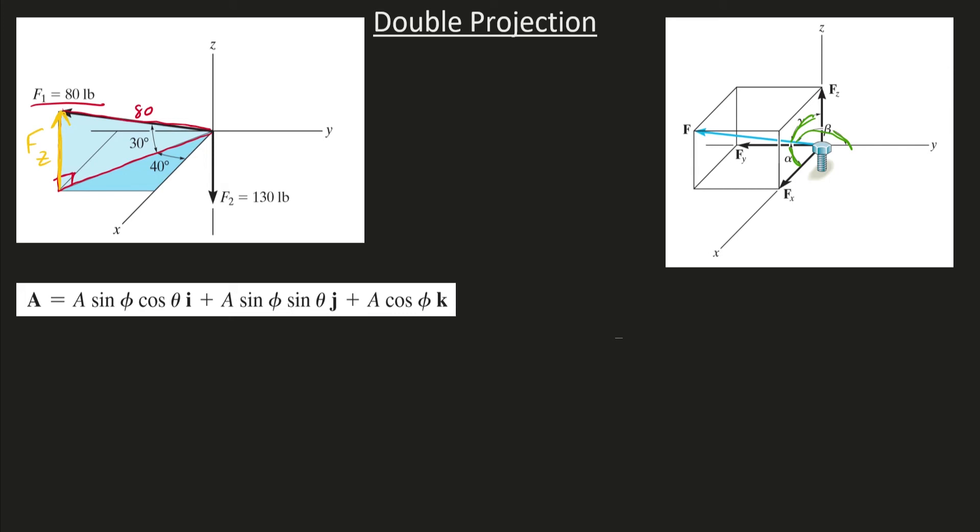We can easily do a sine statement to figure that out. The sine of 30 degrees equals the opposite, that FZ, divided by the hypotenuse, that 80. And if we rearrange, we can easily figure out that the FZ is 40 pounds. All right, so we got that.